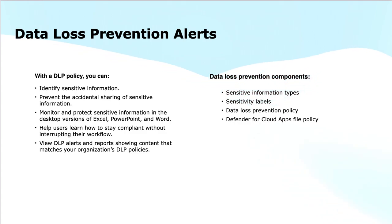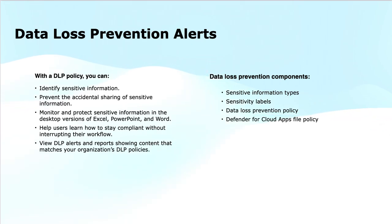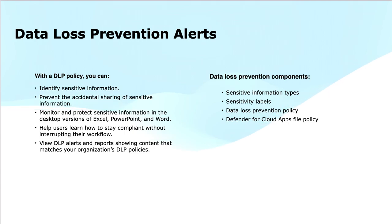Next, I will talk about the DLP components. The first component of DLP is sensitive information types. A sensitive information type is a predefined pattern or rule that DLP uses to recognize sensitive data. These can include things like credit card numbers, social security numbers, or health records. Microsoft provides built-in sensitive information types that help identify and protect specific kinds of sensitive data based on patterns, keywords, or structures. For instance, a 16-digit credit card number can be protected.